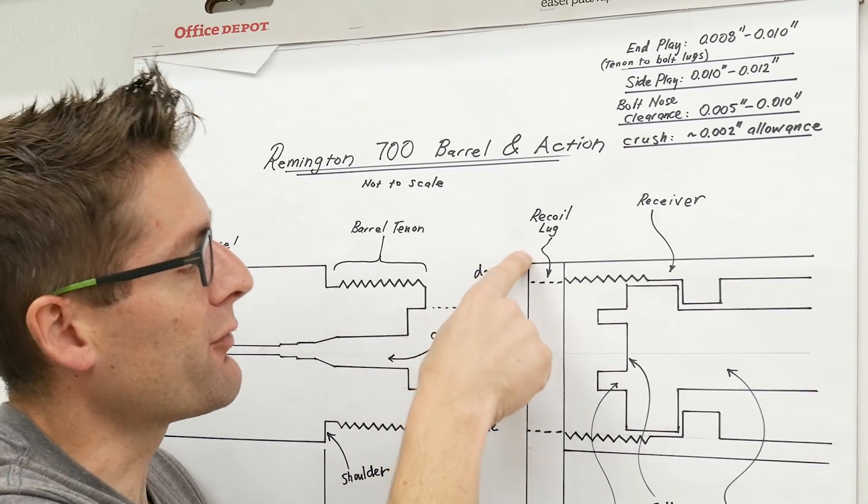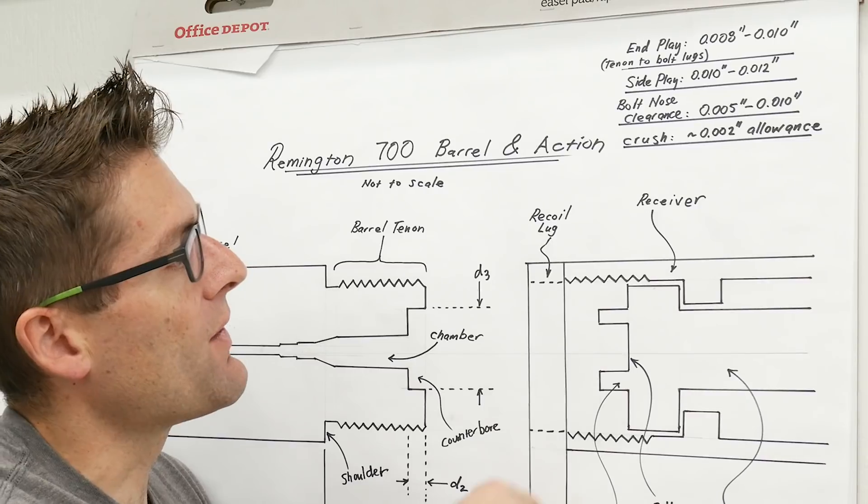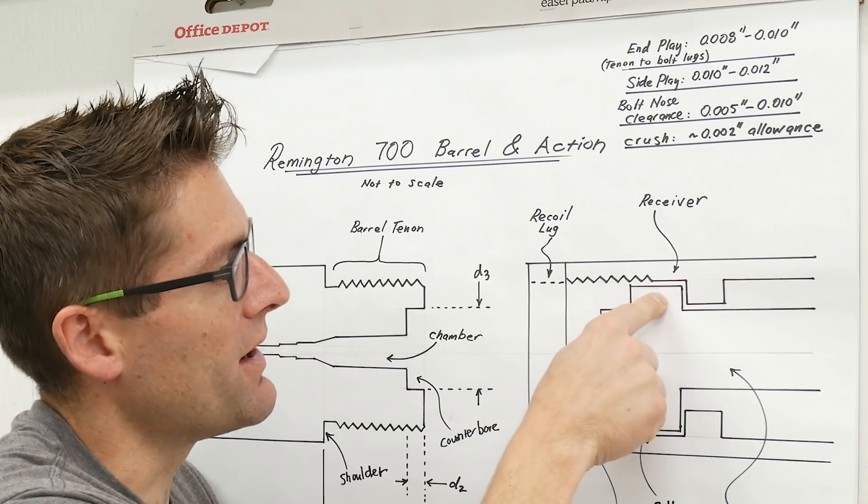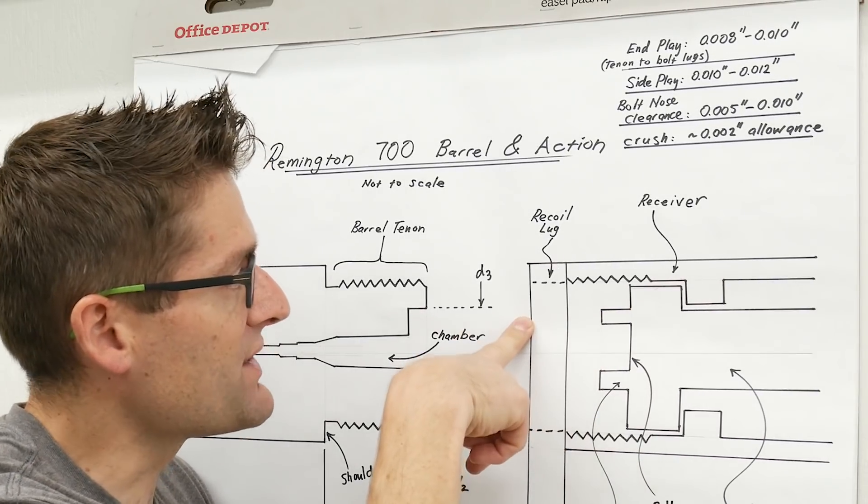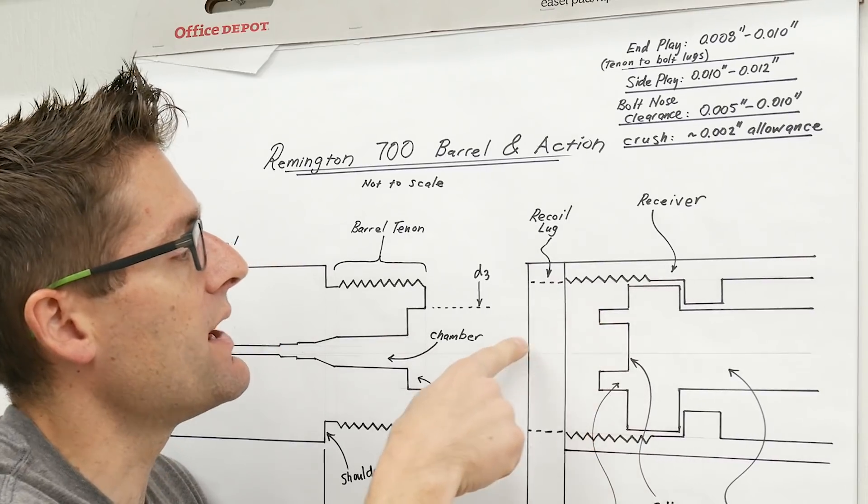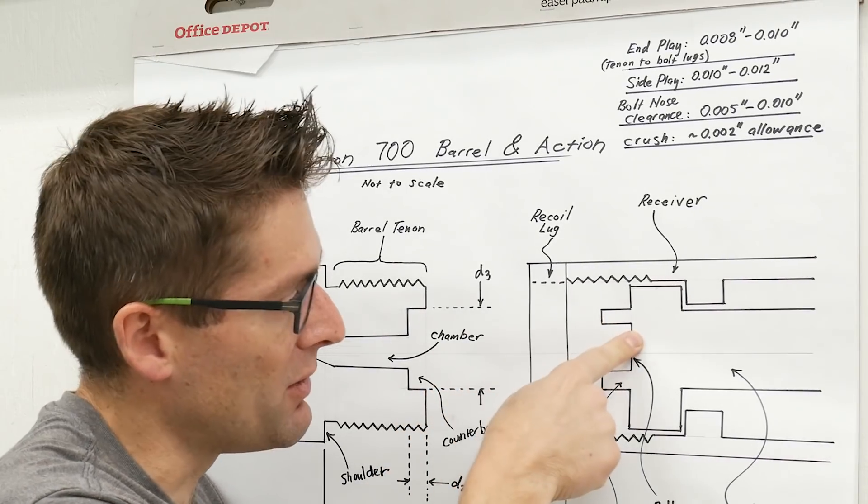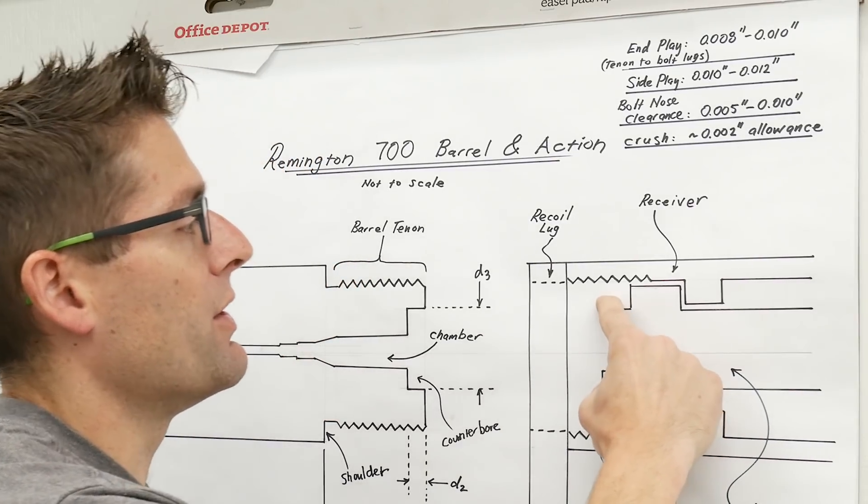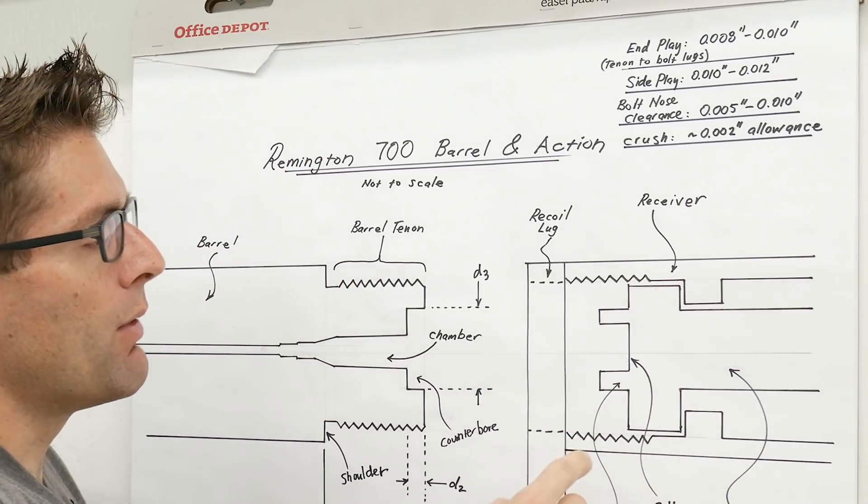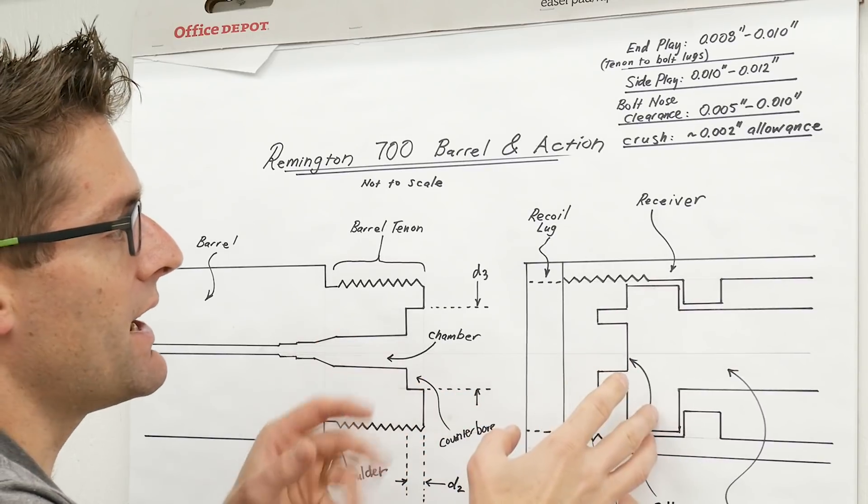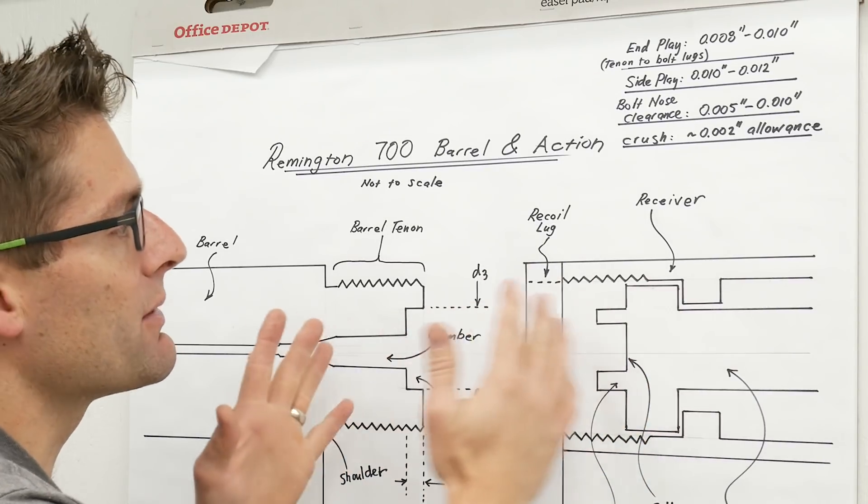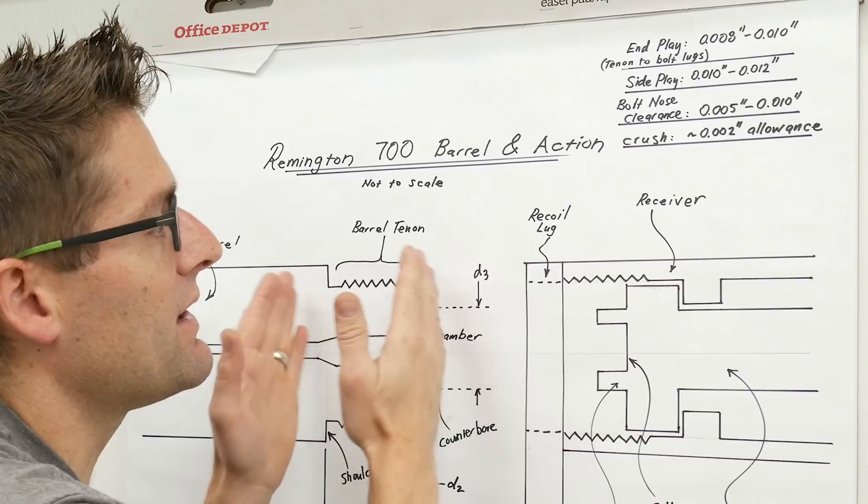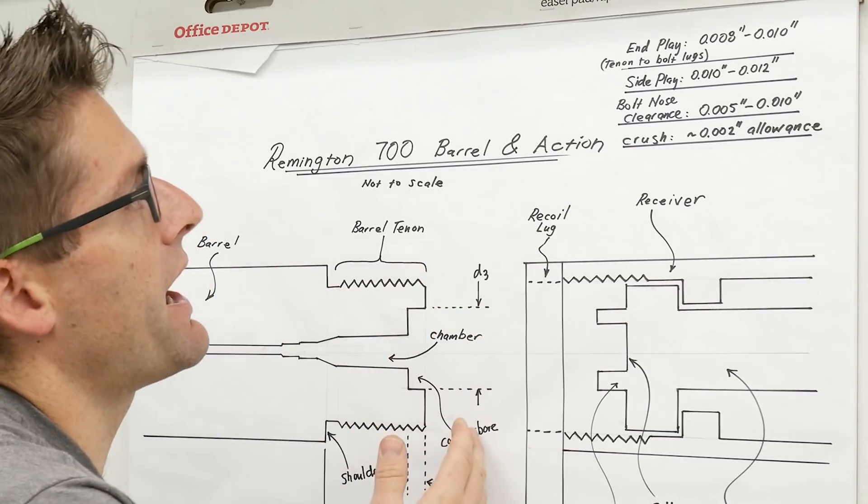So you got to use your rifle, your components assembled like this, and then take some key measurements. You're going to measure from the front face of the recoil lug to the front face of the bolt lugs, from the front face of the recoil lug to the bolt nose, and then from the front face of the recoil lug to the bolt face. You're going to also want the diameter of the bolt nose itself as well.